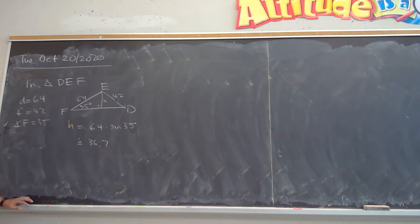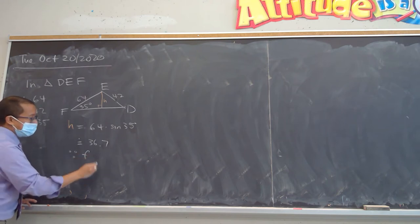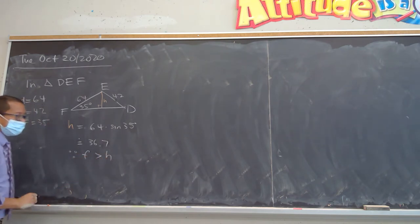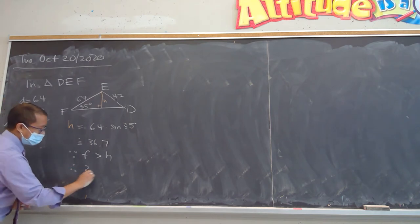That's the height of the triangle, and what that tells us, since F is greater than the height, therefore, two triangles exist.